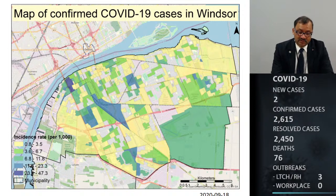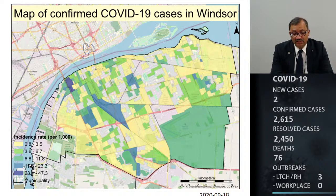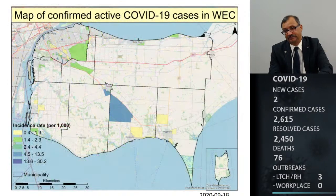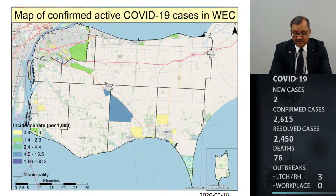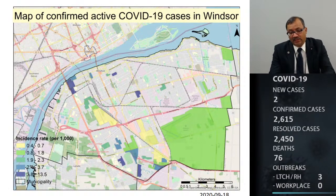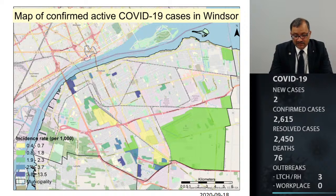Zooming into the City of Windsor map by rate per 1,000 residents, areas with no color are where no lab-confirmed cases were identified. This map shows incidence rate ranging from 0.8 cases per 1,000 to 47 cases per 1,000 population. Focusing on active cases tracked per 1,000 population, active cases are distributed in pockets across Windsor and Essex, and low rates are generally observed. Zooming into Windsor, majority of the cases show some pockets, and we have seen some activity in the South Windsor area.